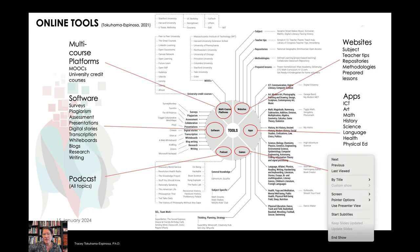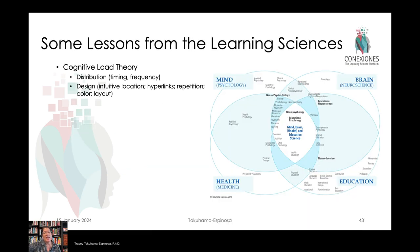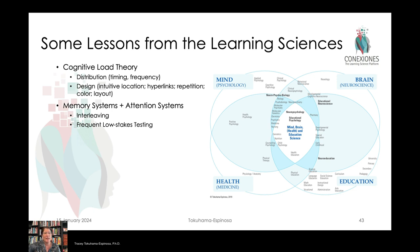Some of the main lessons we've learned through the lens of the learning sciences relate to cognitive load. Good design means there's distribution, timing, and frequency of information. The design is intuitive, with hyperlinks, repetition, and colors that lend to an individual's navigation of information. We've also learned from memory and attention systems — if we do things like interleaving, where we teach something, leave it alone, come back to it, and repeat, we reinforce memory tracks and therefore learning. Frequent low-stakes tests are also a fabulous way of rehearsing memory in the brain.